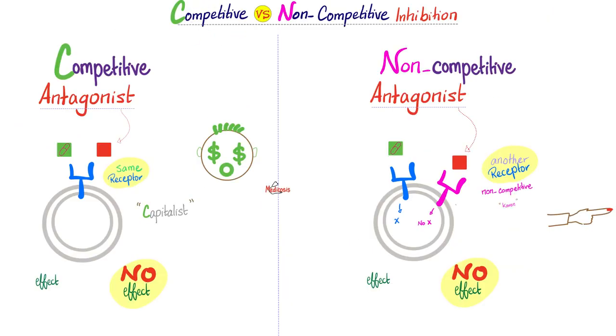In the next video, we'll talk about competitive and non-competitive inhibition. For now, I just want you to remember that the competitive antagonist is the greedy capitalist and the non-competitive antagonist is Nancy the Karen. Why is that? You will discover in the next video.